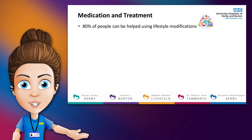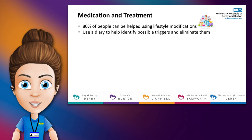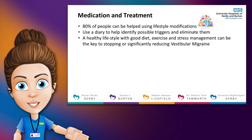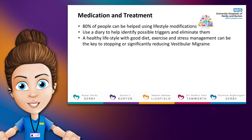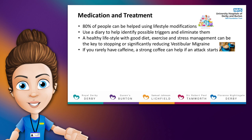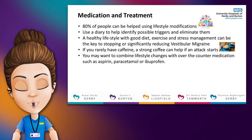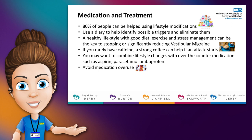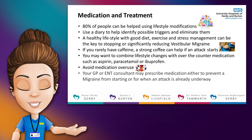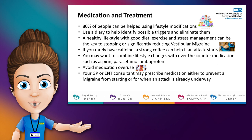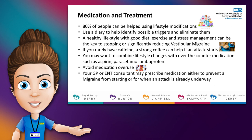Medication and treatment. 80% of people can be helped by lifestyle modifications. Use a diary to identify your triggers and eliminate or take steps to control as many of them as you can. A healthy lifestyle with good diet, exercise and stress management can be the key to stopping or significantly reducing vestibular migraine. If lifestyle changes alone don't control your symptoms you may want to combine these with over-the-counter medication like aspirin, paracetamol or ibuprofen to be taken when the attack starts. Avoid medication overuse however as this can also cause headaches. Your GP or ENT consultant may prescribe medication if needed. These can take two forms: something to take to prevent a migraine starting, or something to take when an attack is underway.